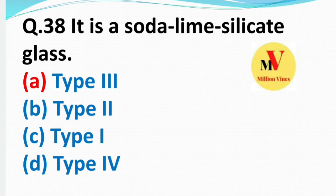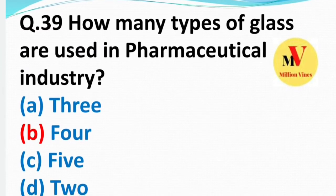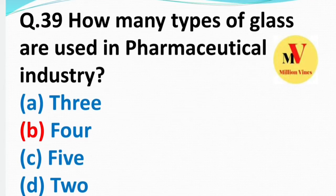Next: Soda lime silicate glass comes under — right answer A — Type 3. Next: How many types of glass are used in pharmaceutical industry? Pharmaceutical industry mein four types ke glass use kiye jaate hain — right answer B — four.